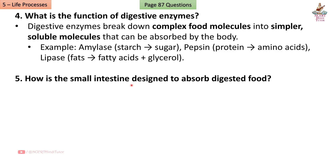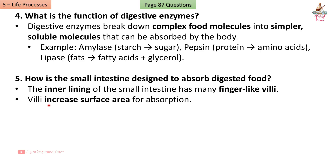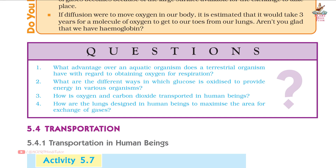Examples of digestive enzymes: Amylase breaks starch into sugar; Pepsin breaks protein into amino acids; Lipase breaks fats into fatty acids and glycerol. Question 5: How is the small intestine designed to absorb digested food?